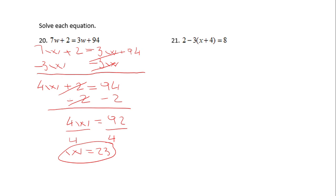Now let's take a look at number 21, which says 2 minus 3 times the quantity x plus 4 equals 8. What is different in this equation than the others? Obviously we can see this parenthesis here.